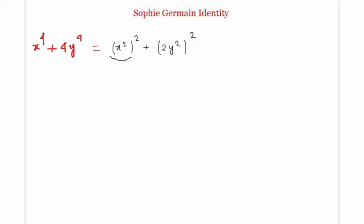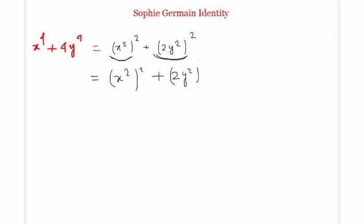Initially we can see that one term is like a² and the other term is like b². In order to factorize this expression, we will add a 2ab term and subtract a 2ab term. That means we add and subtract 2·x²·2y², which is the 2ab term.